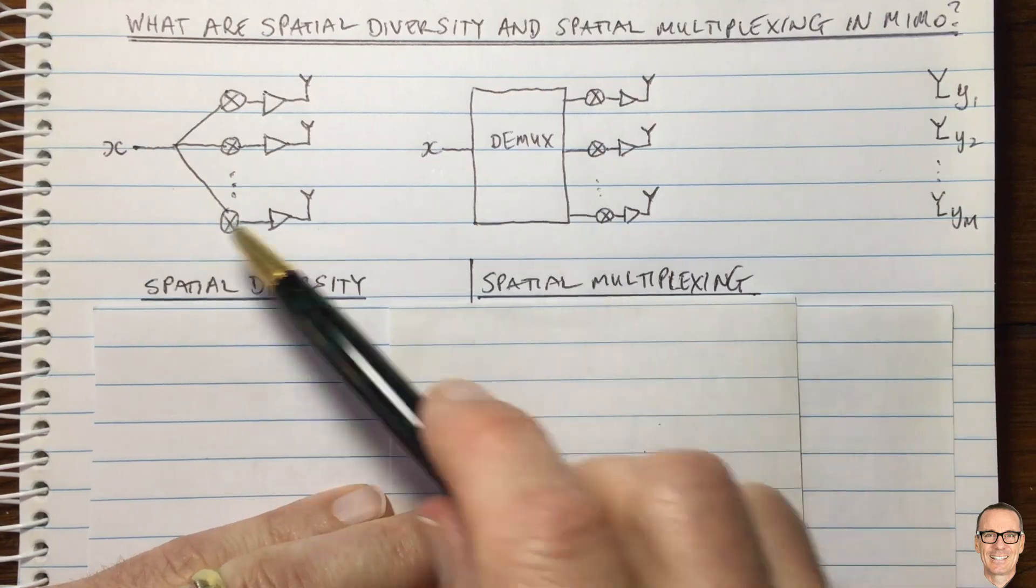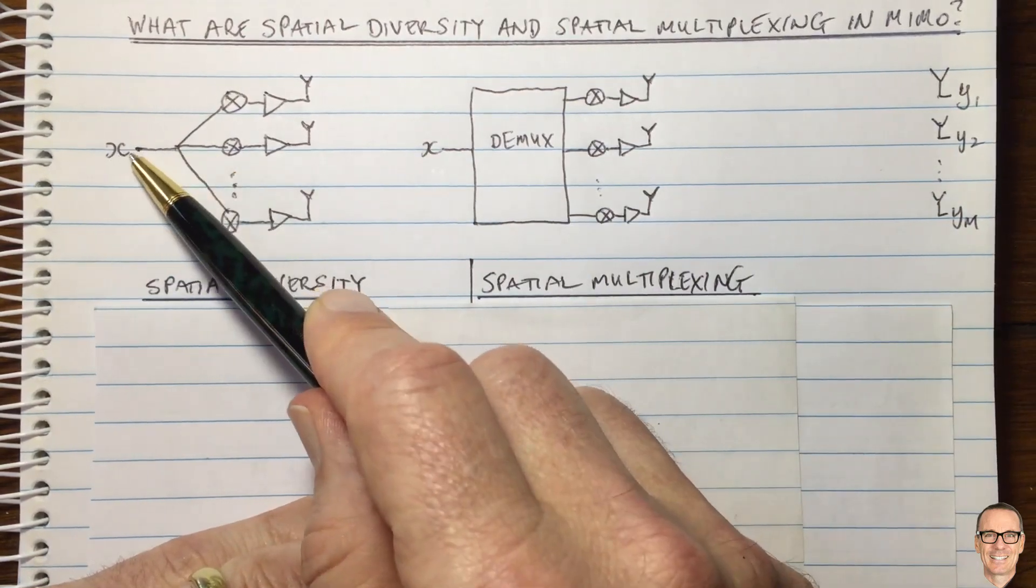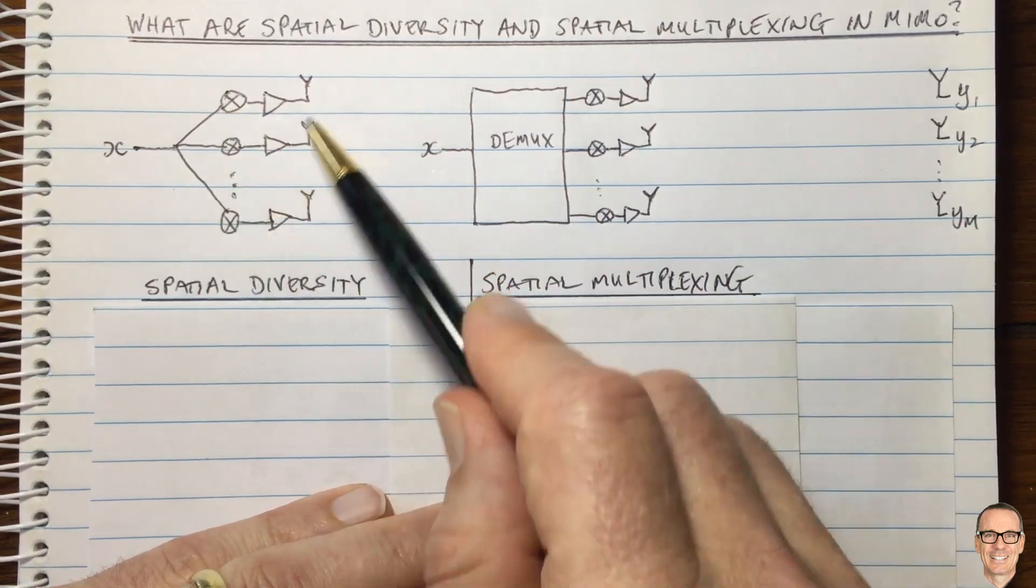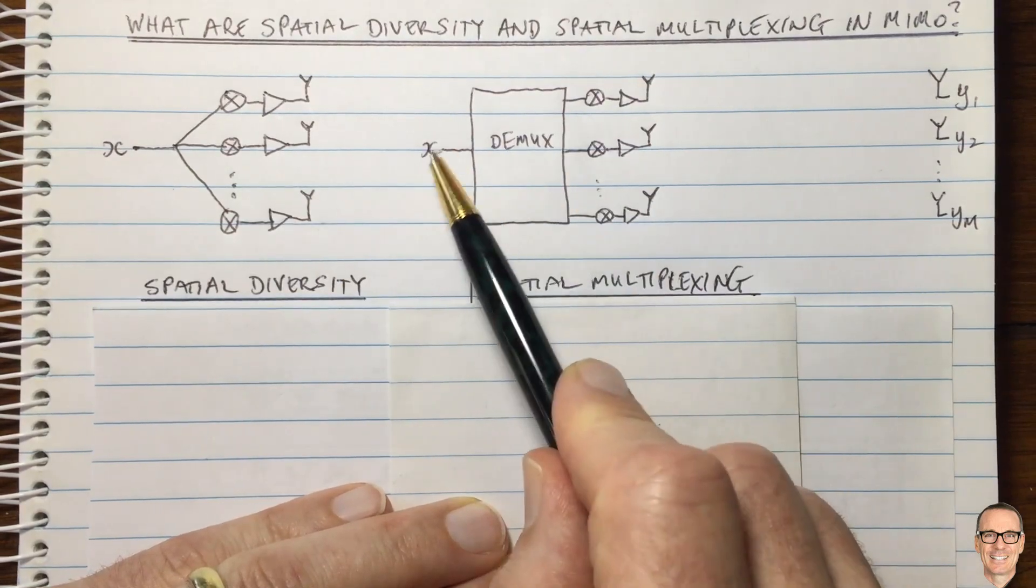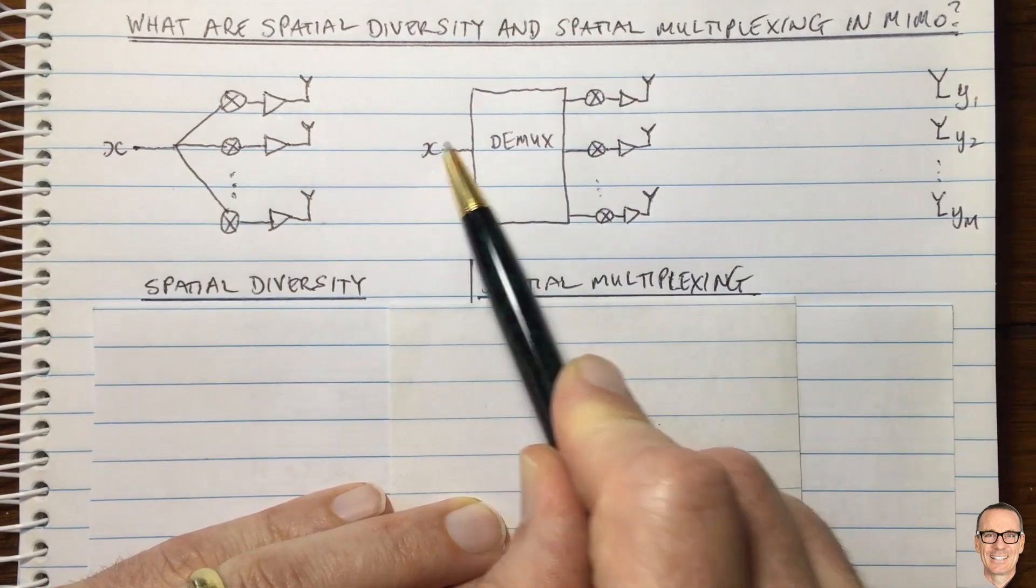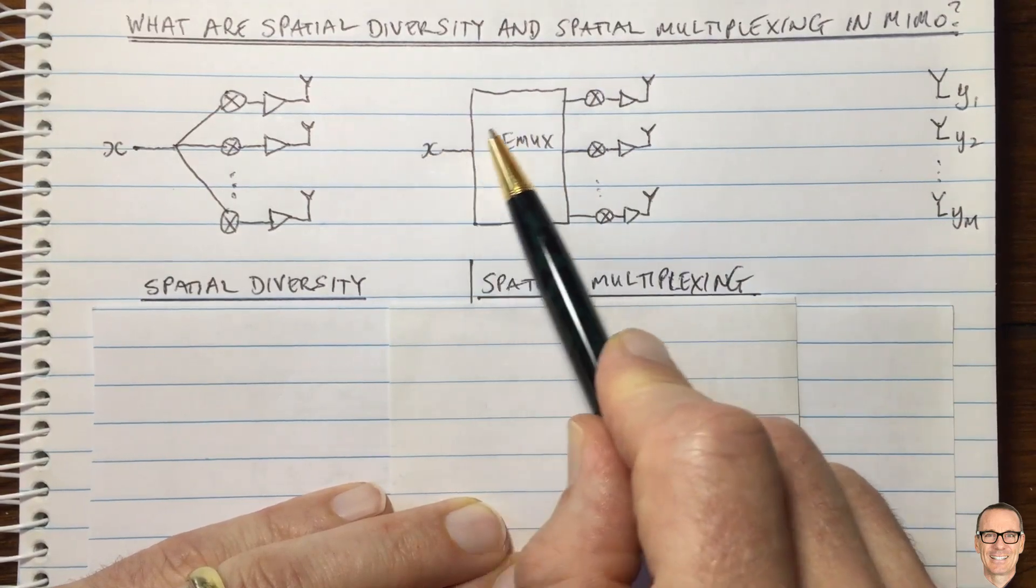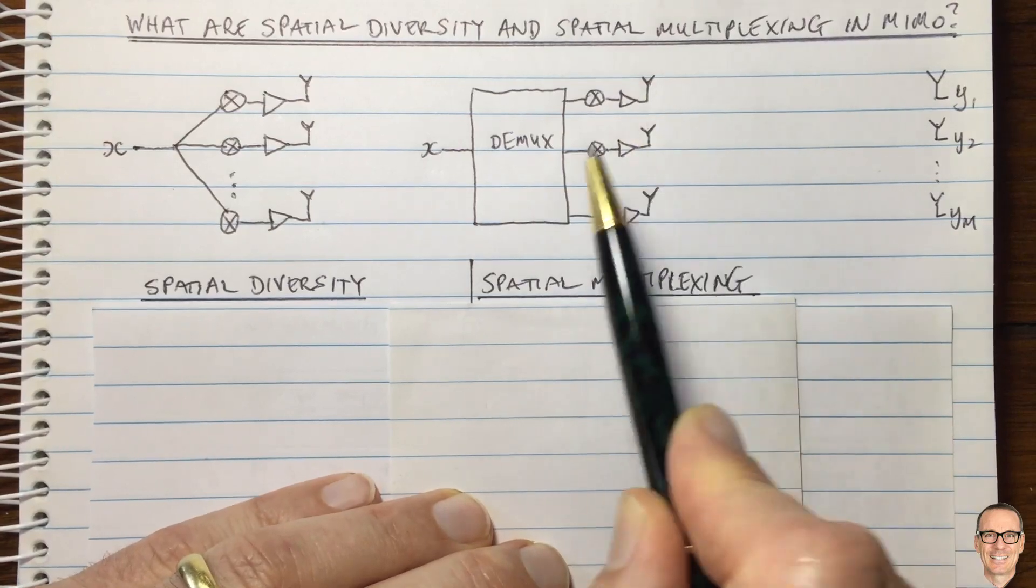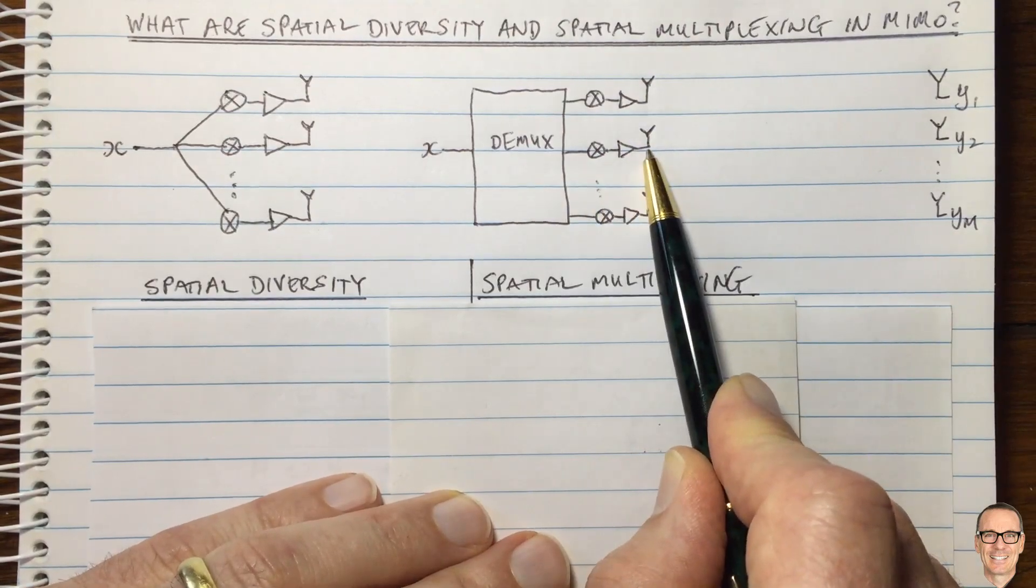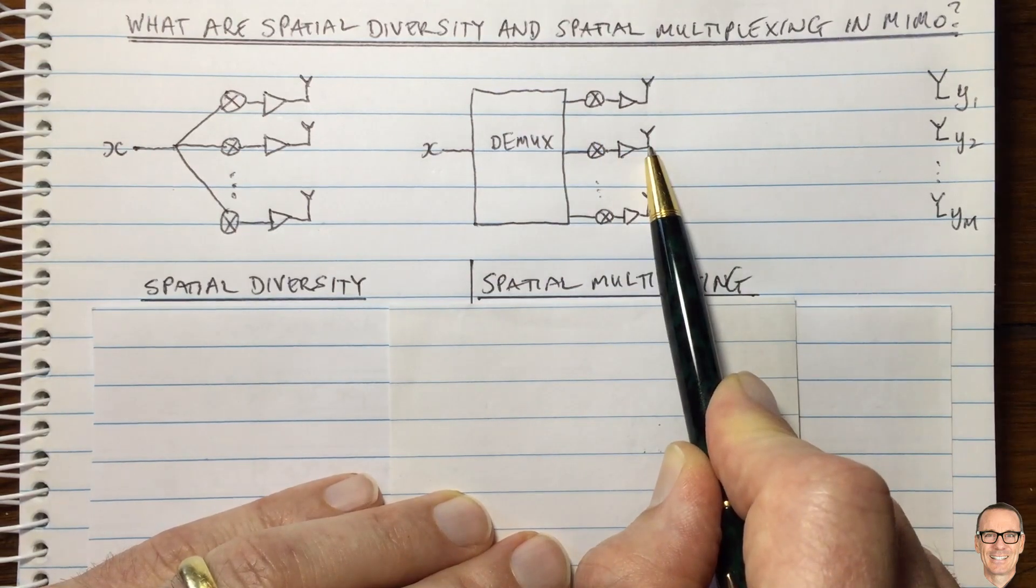Let's look at the contrast here. Each symbol is coming in and when that symbol comes in, it gets sent maybe slightly modified, but it gets sent off each of the antennas. Whereas here, these data symbols are first of all demultiplexed. And so there will be separate data sequences going off the first antenna from the data sequence that goes off the second, and so on.